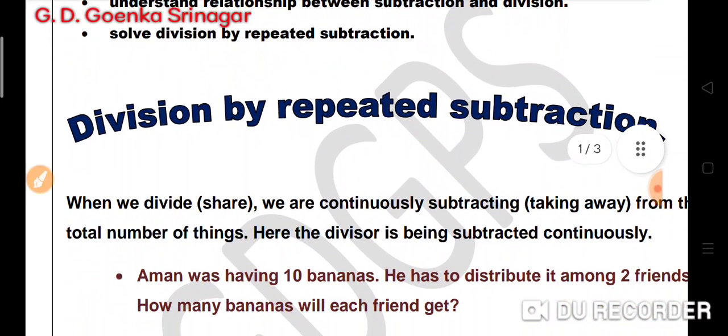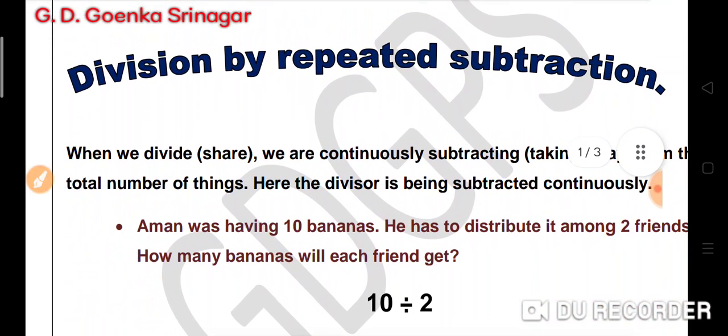Division by repeated subtraction is where we divide or share. When we do our distribution, we are continuously subtracting from the total number of things. Subtraction means taking away, and here the divisor is being subtracted continuously until we get 0.